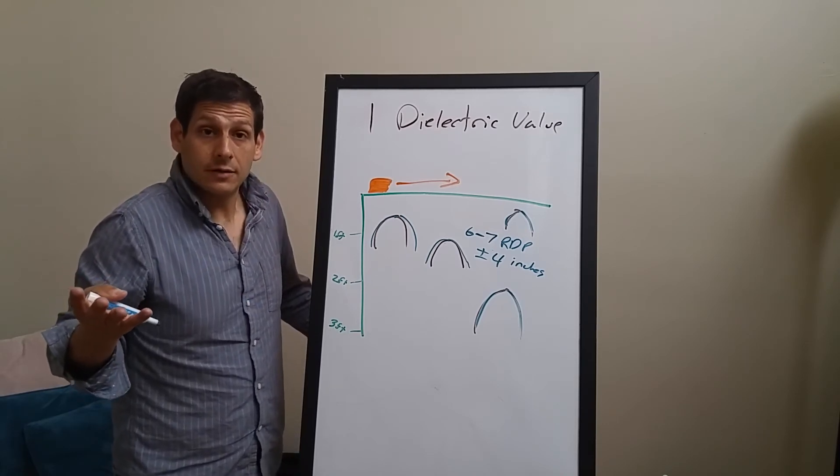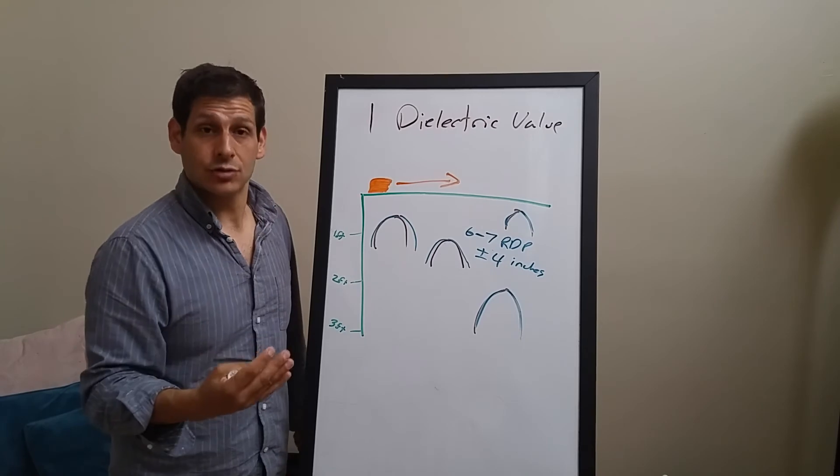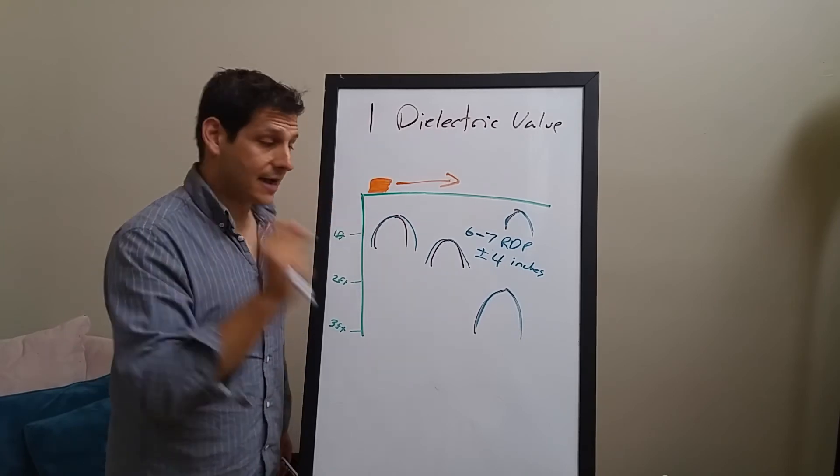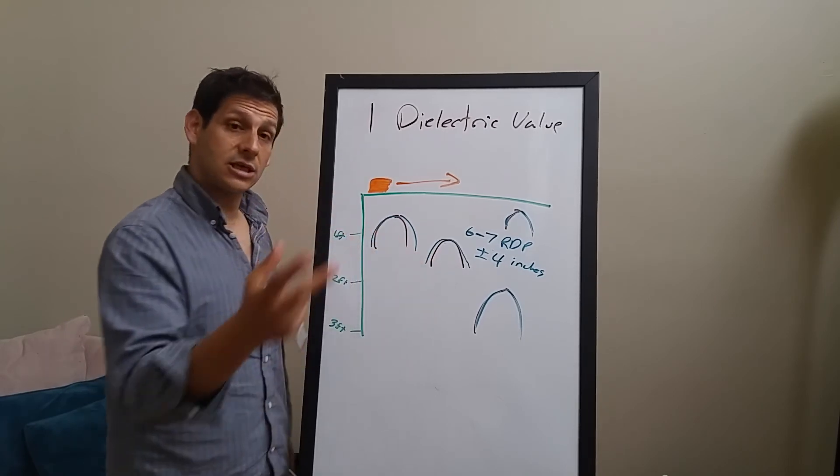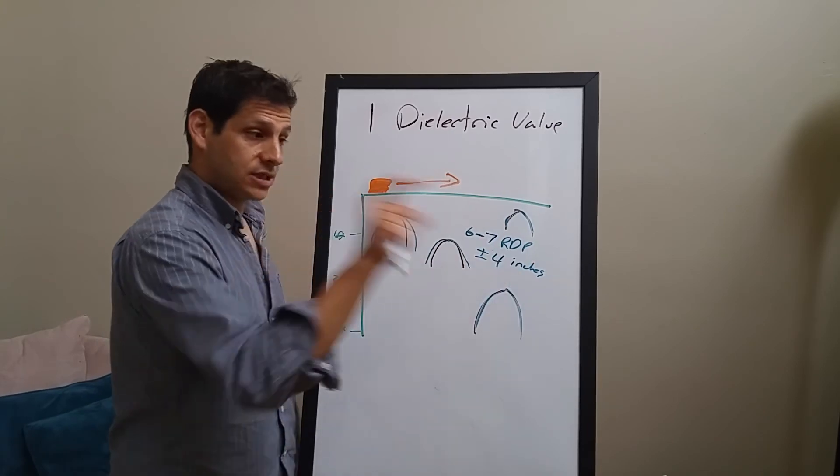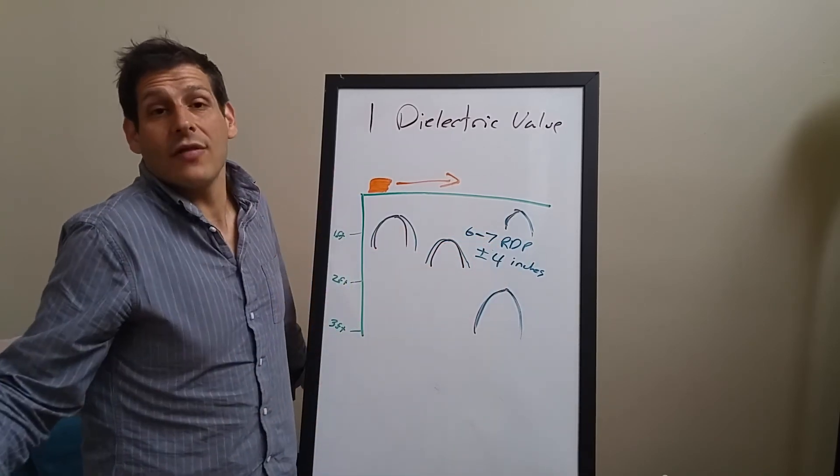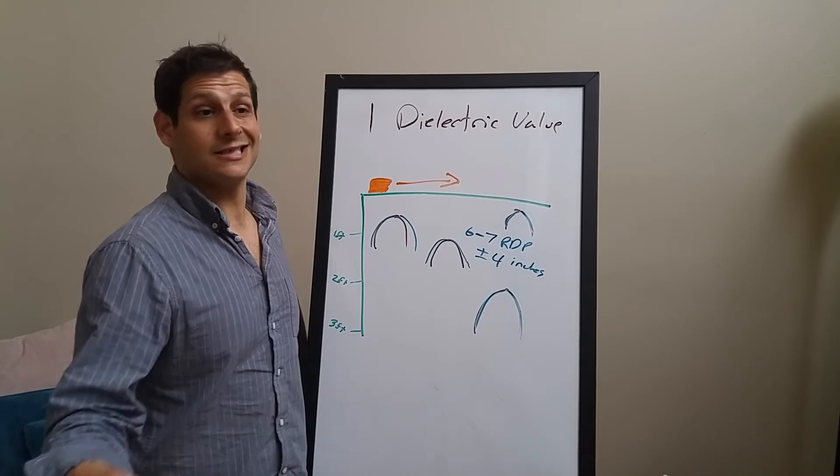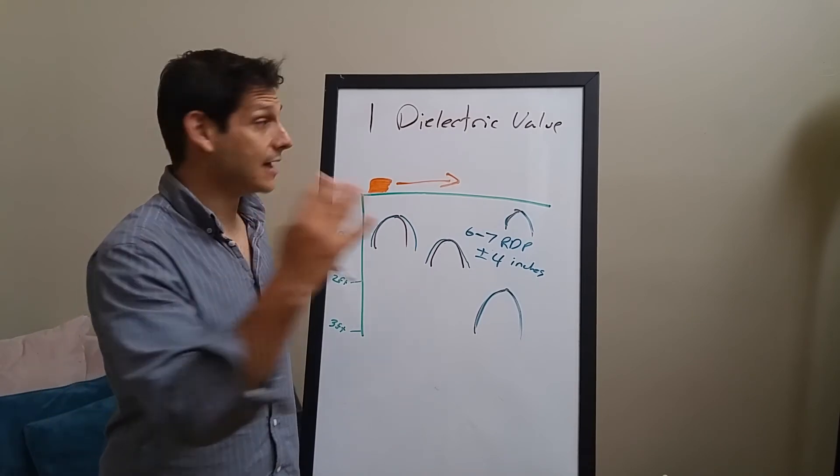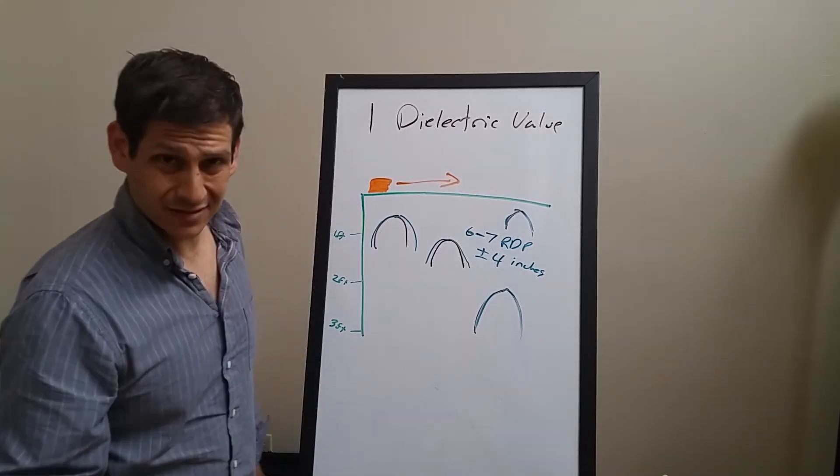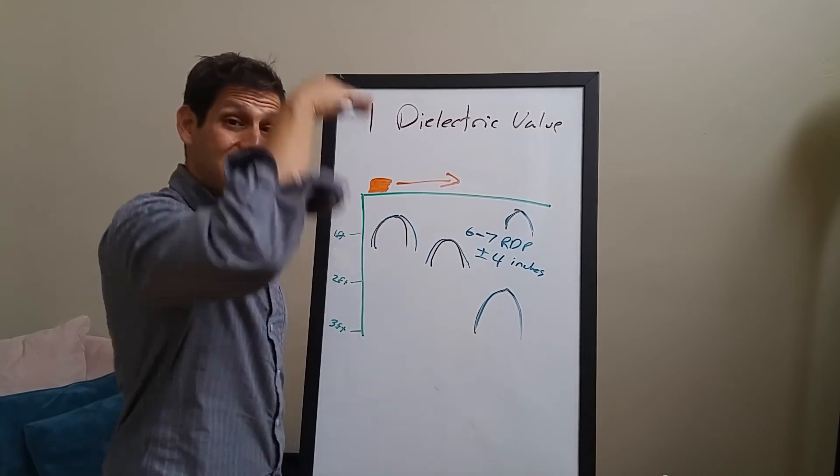What do you do? Well, you go as long as you can until you find a hyperbola that you can match. Because let's say you put in wet soil, your system says 20, but in reality, maybe it ain't all that wet. And if it's not all that wet and it's 16, that's a difference of four values. That's a big difference. That's over a foot difference in depth.